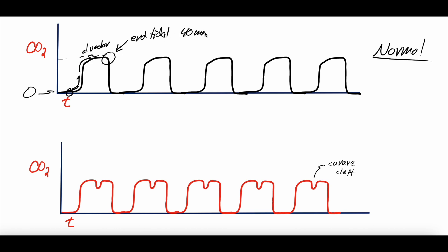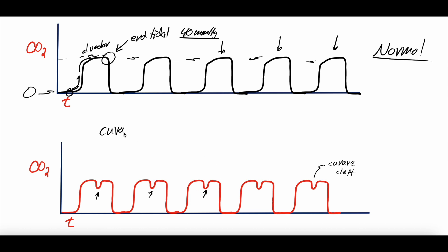Let's say the end-tidal is 40 mmHg — 35 to 45 is normal. You get these similar-looking waveforms with each breath; every one of these represents a breath. The bottom waveform here is an abnormal capnographic waveform. You can see the morphology is similar, but you get these little divots, these little niches — and this is what they call the Curare Cleft.